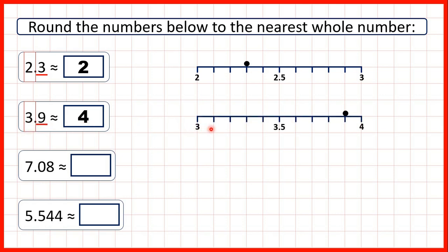And we can see on a number line that 3.9 is closer to 4 than it is to 3. So we're rounding up to 4.